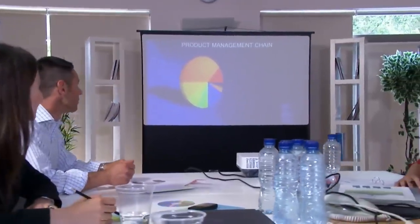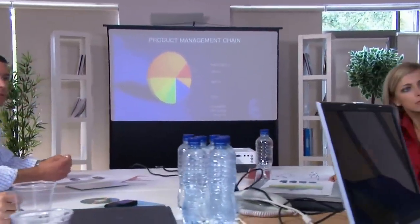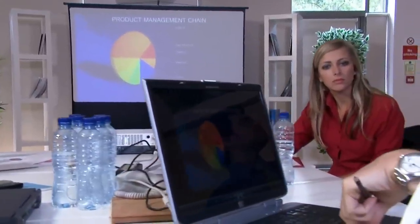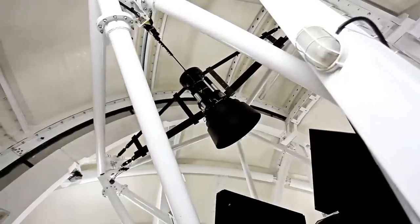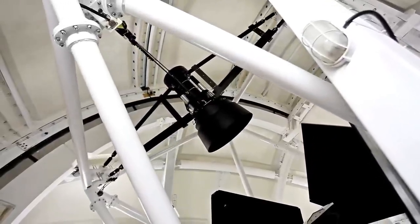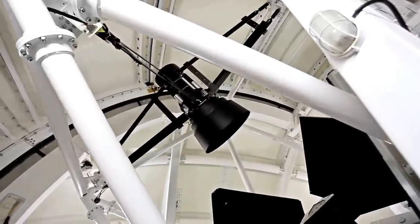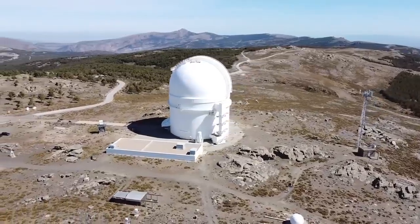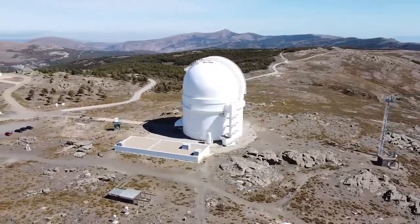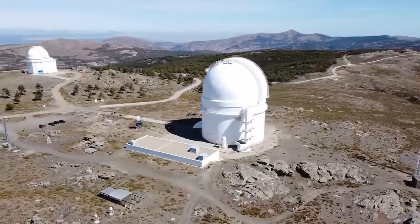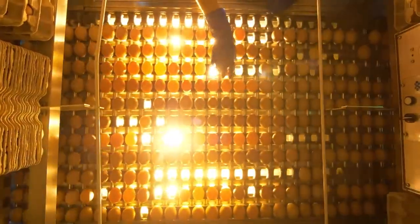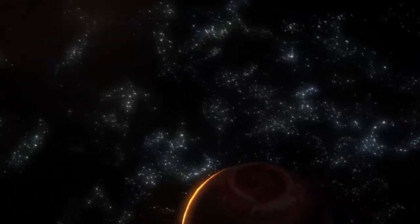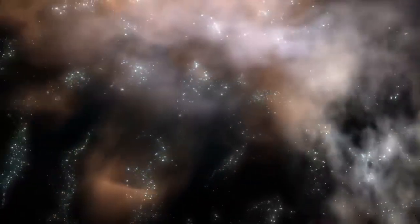In recent times, as technology has advanced and our observational tools have become more powerful, astronomers have focused their attention on one of the most captivating stars visible to the naked eye, Betelgeuse. This red supergiant, situated in the Orion constellation, has historically been among the brightest objects in the night sky. The star has begun to behave in an unusual manner, exhibiting significant and unexpected changes in brightness.